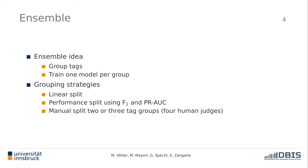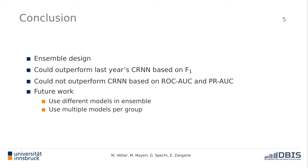The third and most interesting one is manual split. We asked four human judges to categorize all tags into the two groups mood and theme. To get two groups we use majority vote, and to get three groups we put tags into mood and theme where all judges agreed, and build a third category called 'uncertain' with all the remaining tags.